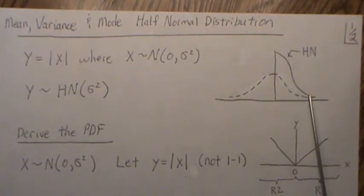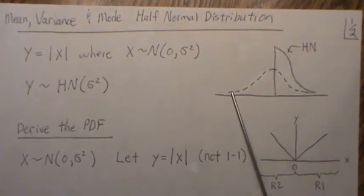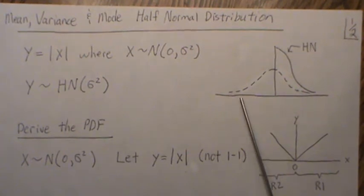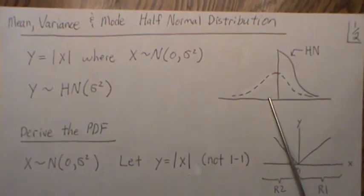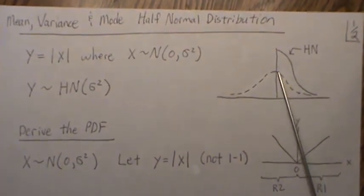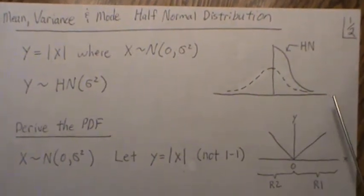Pictorially, if we have a normal distribution with some variance sigma squared and we take the absolute value, this part on the negative region gets folded to the right side. So this piece is added to this, and that's why it jumps up by two, and of course comes down like that.